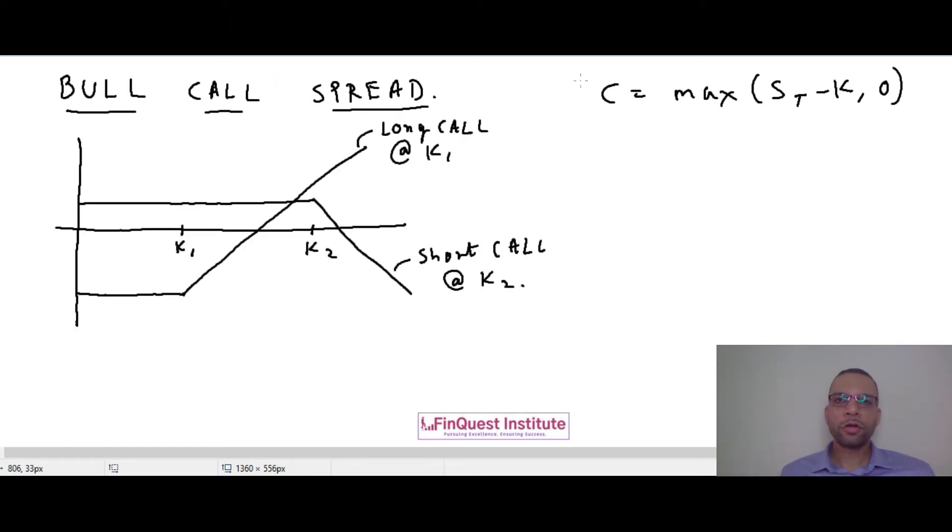As part of bull call spread, we are taking on two call options. We purchase one call option with a strike price at K1 and we sell a call option with a strike price at K2. Both of these call options are on the exact same underlying and they have the same time to maturity capital T.